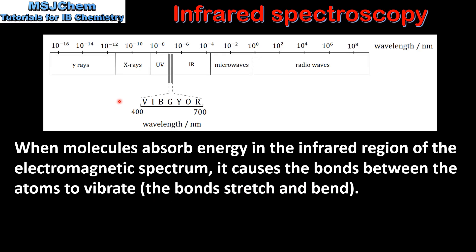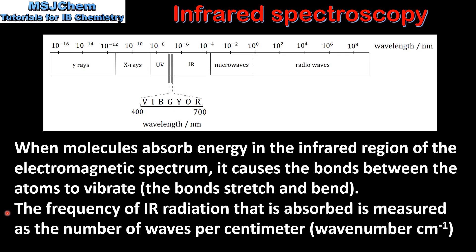Here we have the electromagnetic spectrum, and we can find infrared radiation between microwaves and visible light. The frequency of infrared radiation that is absorbed is measured as the number of waves per centimeter. This is known as the wave number.